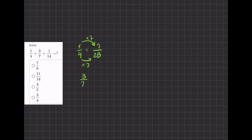The next one, 3/7, we want to turn into 28. To get from 7 to 28 we multiplied by 4, and we'll do the same for the numerator, giving us 12/28.